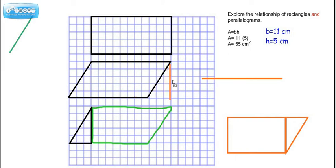So sometimes on a worksheet, you might even see the height represented as a dotted line outside the figure. But it does have to be perpendicular, meaning that it forms a 90 degree angle with whatever you're calling the base. So you can see that in both cases, the base is 11 and the height is 5. So both of these figures have 55 square centimeters.